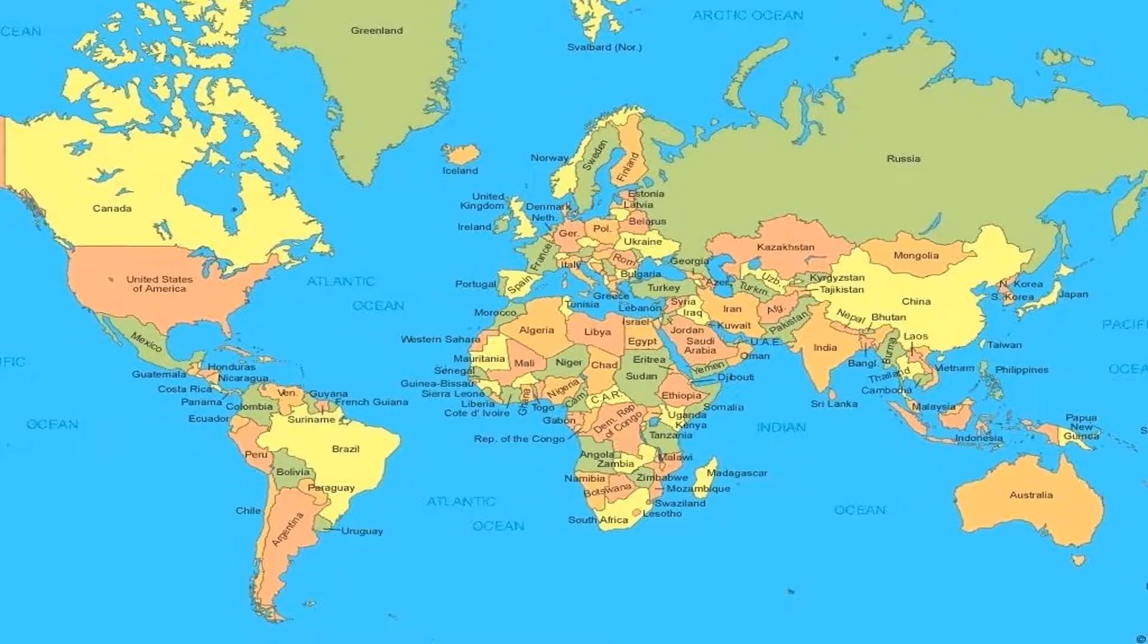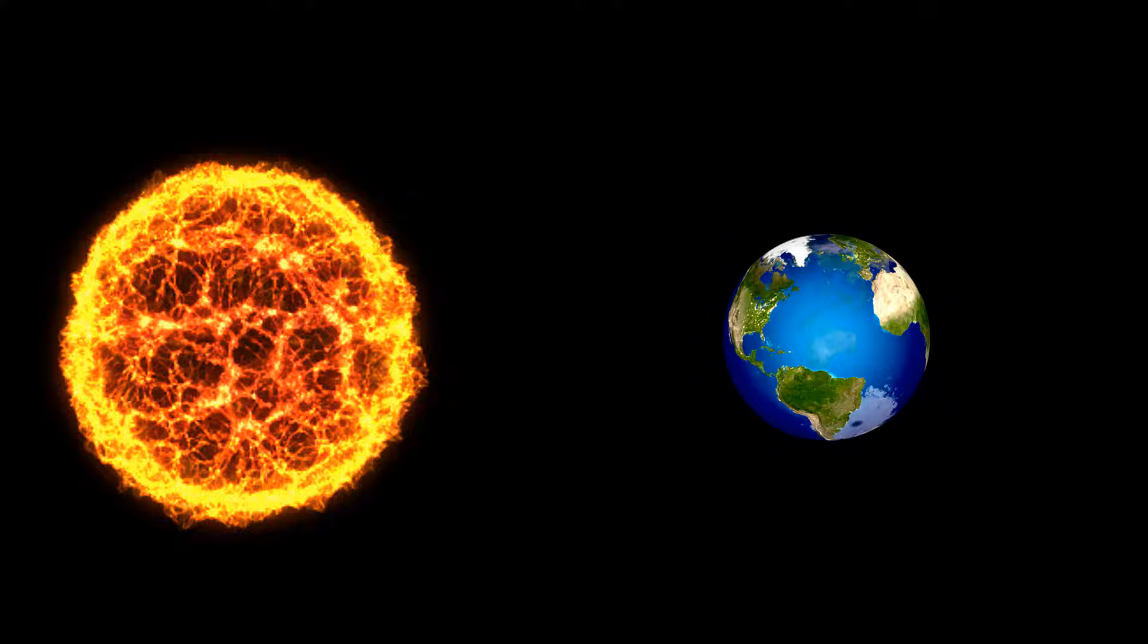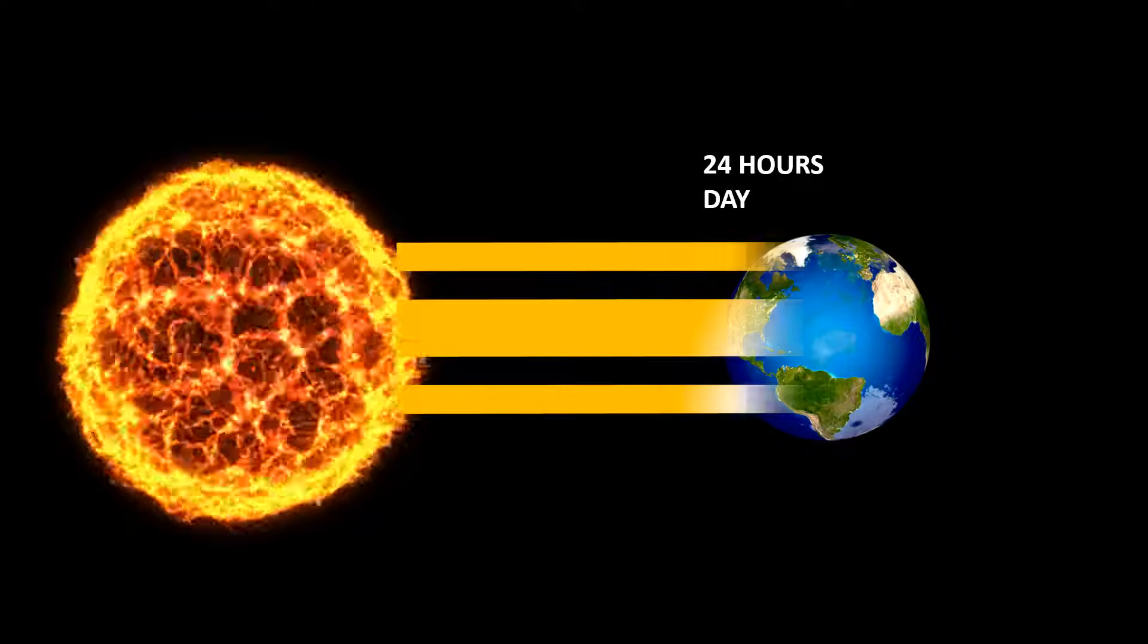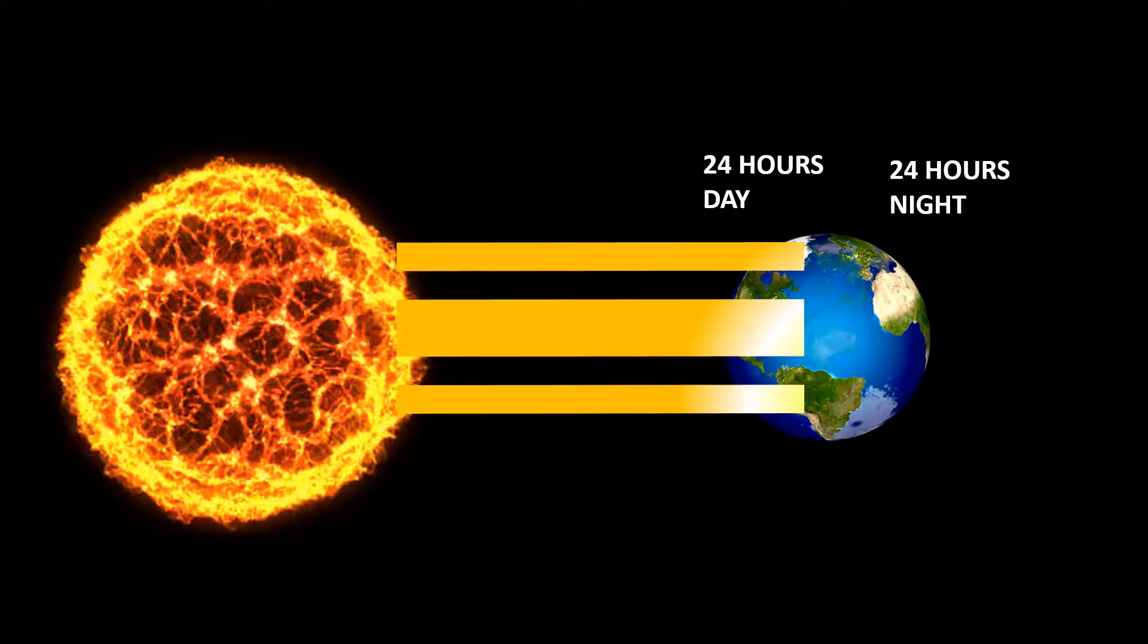That is why when it is day in India, it is night in America. If the Earth does not rotate, then one part of the Earth will be in continuous daylight throughout the year, and other part of the Earth will be in continuous night.